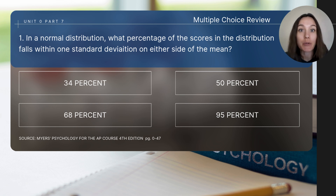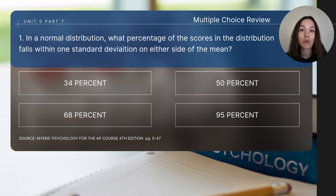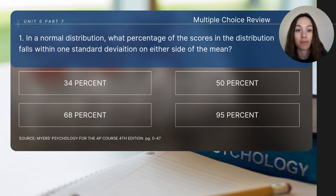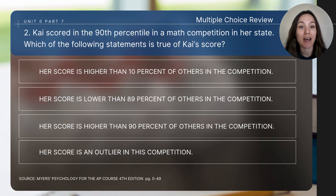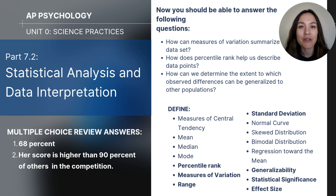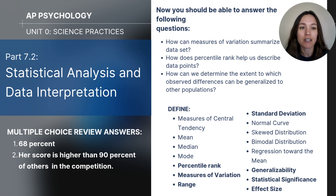Before closing out this video, let's do a quick check for understanding. Pause the video to determine the answers. Question one: In a normal distribution, what percentage of scores falls within one standard deviation on either side of the mean? Question two: Chi scored in the 90th percentile in a math competition in her state — which of the following statements is true of Chi's score? This concludes video 7.2 Statistical Analysis and Data Interpretation. Check your answers to the multiple choice questions and see if you can define the bolded concepts.